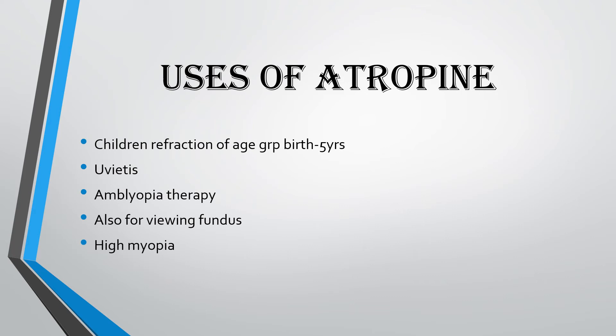Atropine has many uses but there are 5 primary ones. It is used in children's refraction for the age group birth to 5 years, because children have very high accommodative power and Atropine is the strongest cycloplegic drug, making it the best choice to relax accommodation in children. As it also has a strong mydriatic effect, it is also used in uveitis to prevent posterior or anterior synechiae.